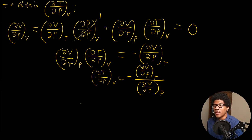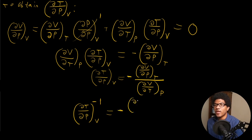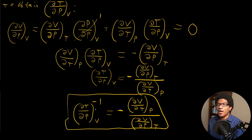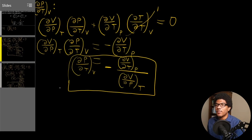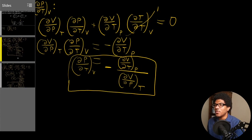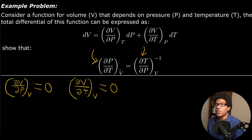Now we're really after the inverse of this. So let's go ahead and invert it and compare it to what we got previously. All we have to do is flip it — what's on the denominator goes to the numerator. It's still negative, so we get negative (∂V/∂T) at constant P, over (∂V/∂P) at constant T. Comparing this to what we got on the previous slide — DV/DT at constant P over DV/DP at constant T — we get the exact same thing. So the inverse of DT/DP is equal to DP/DT at constant volume.